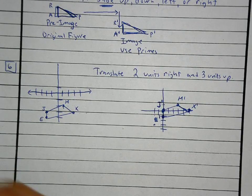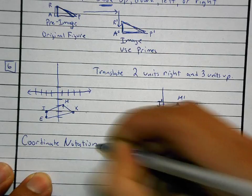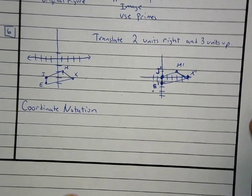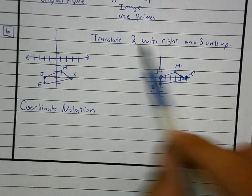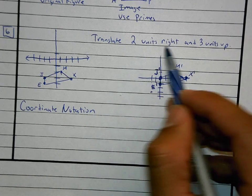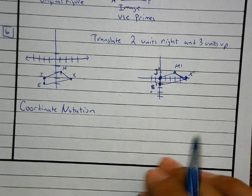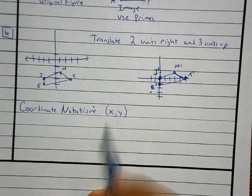We also have to know something called coordinate notation. What we just did was write the translation in words — like 'two units right and three units up.' In coordinate notation, we write the same thing using the fancy mathematical notation. Here's an example of how we'd write what we just did.